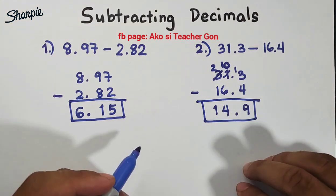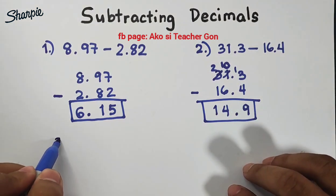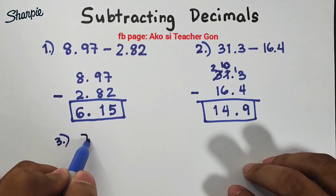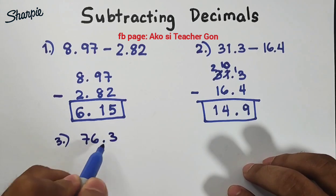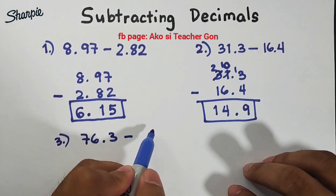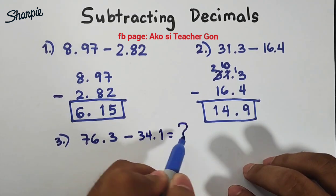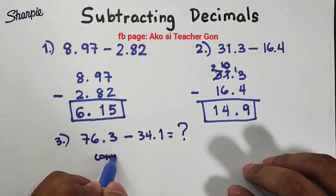So here's my task or your activity. In number 3 I will ask you to subtract 76.3 minus 34.1. So what's the answer? Comment your answer.